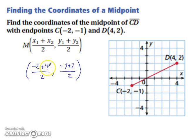-2 plus 4 is 2, so we have 2 divided by 2. -1 plus 2 is 1, so 1 divided by 2. And you can reduce your 2 over 2 to just simply 1. You can leave this as 1/2 or if you prefer a decimal is okay.